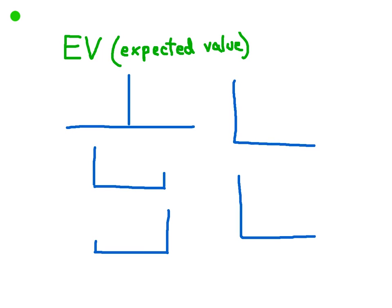Expected value, or EV as we know it in the poker world, refers to the long-term average profit or loss that you expect from a specific decision in poker. To start understanding EV in more depth, we should start with the normal distribution.